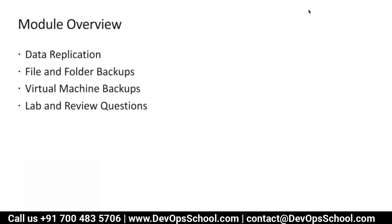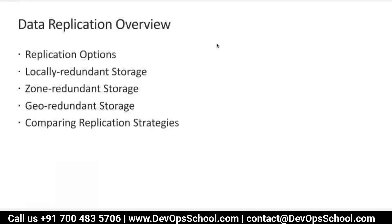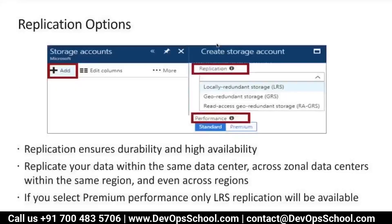The first topic will be theoretical only because you've already been to that particular topic earlier. If I look for data replication, you've got different replication options available for the storage account: LRS, ZRS, geo-redundant, and read-access geo-redundant. You can compare different types of replication strategies for the storage account. When you create a storage account, replication ensures something called durability and high availability — replicating data across different regions or within the same region but across different data centers.